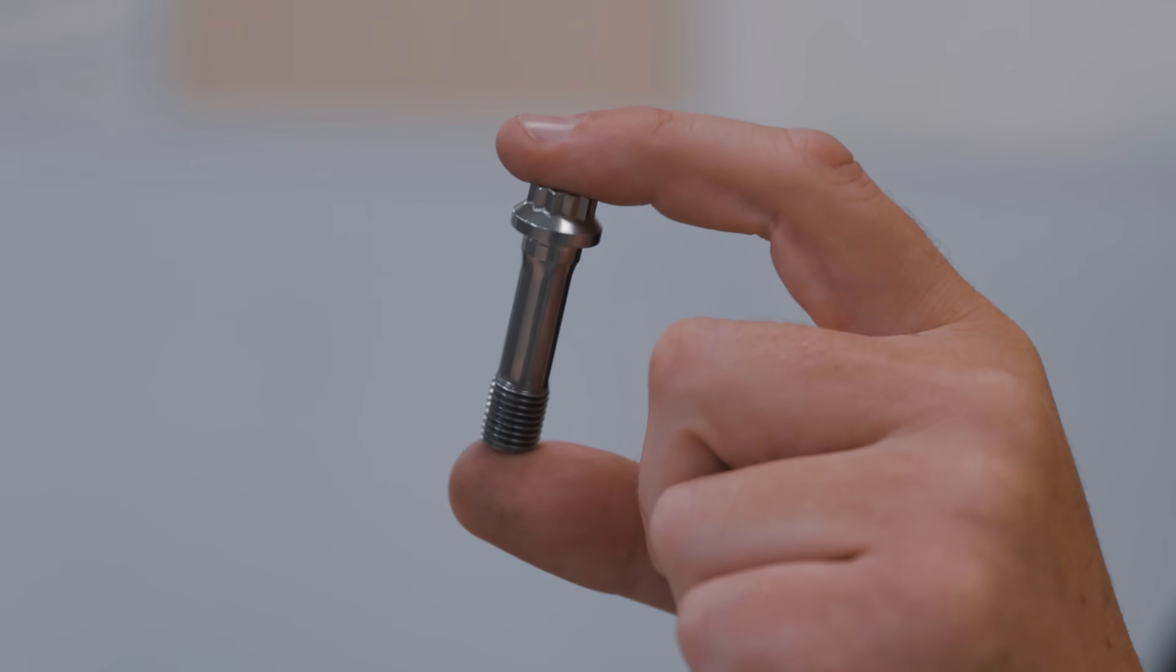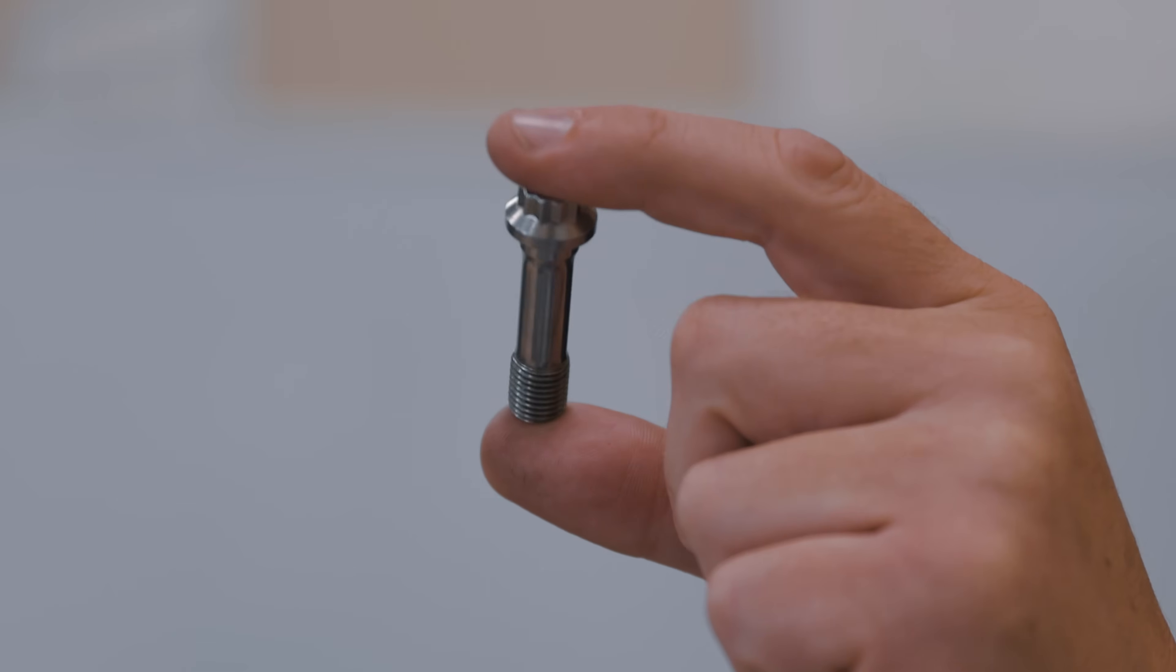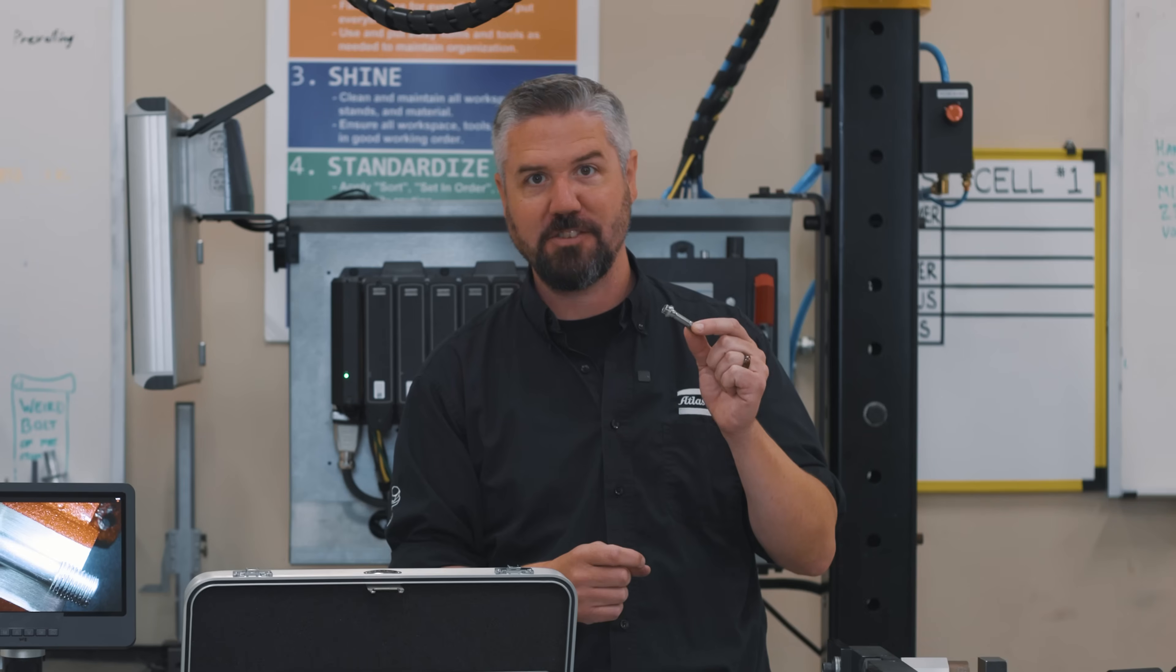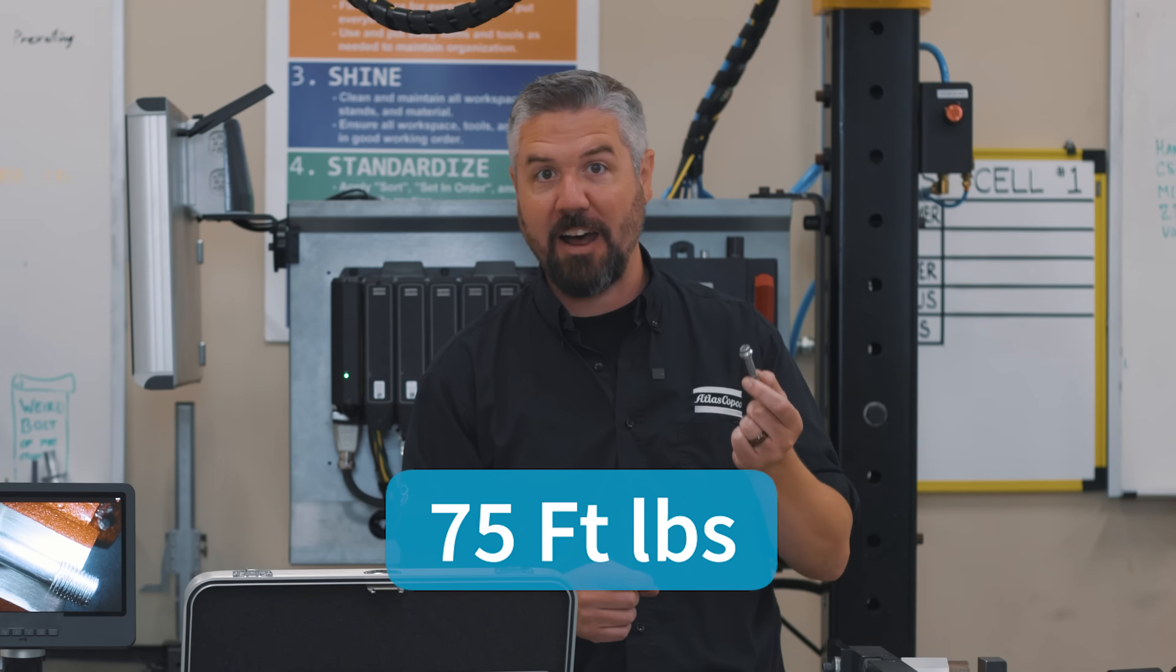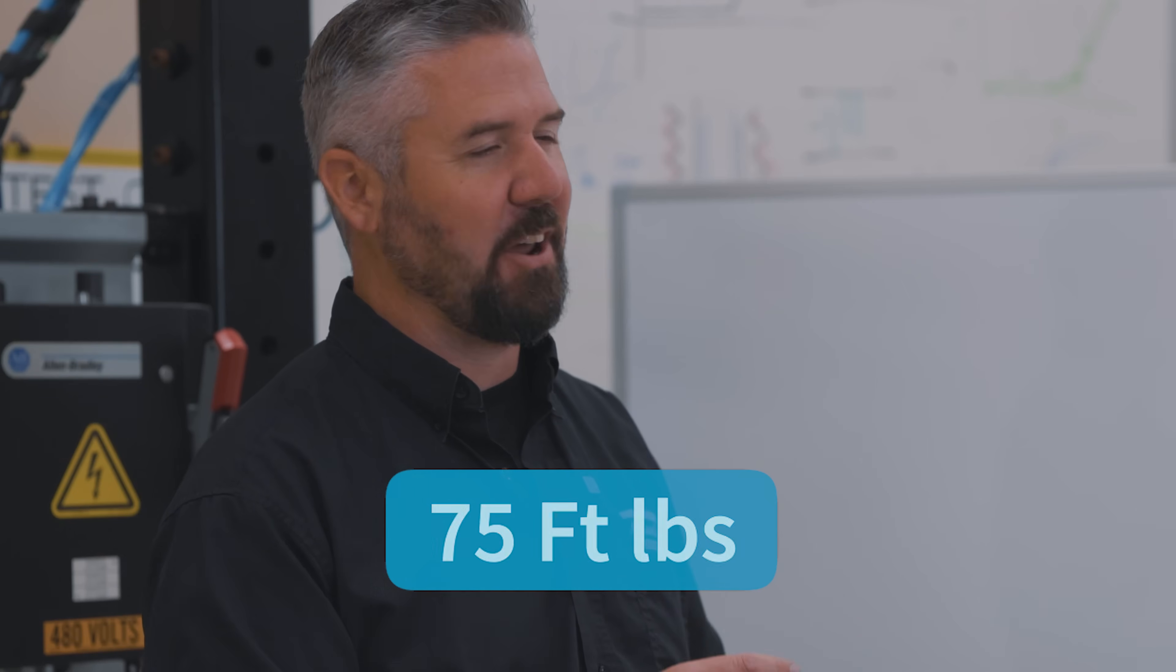After that we've got a 260,000 psi tensile strength fastener. We're going to take this to the spec of 75 foot pounds, then take it all the way up and see how much torque it takes to break this fastener. Let's compare these two things and check it out on our rig.